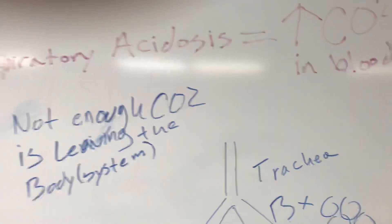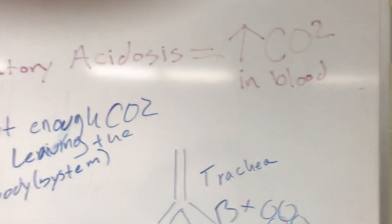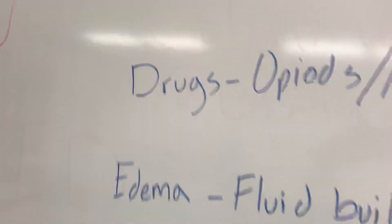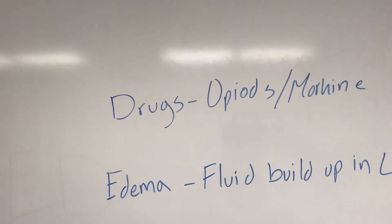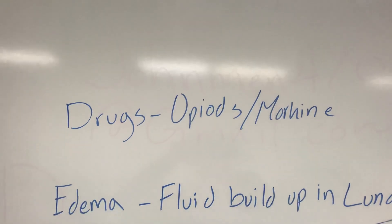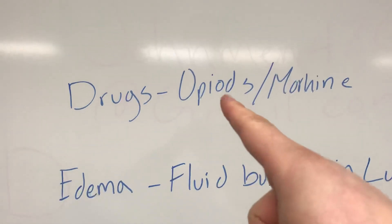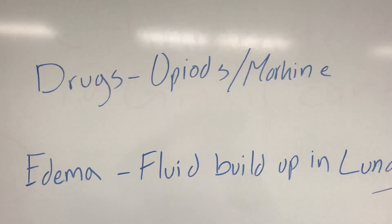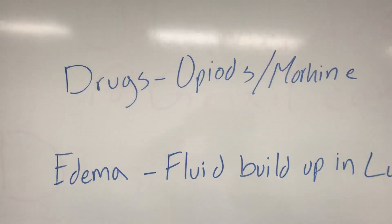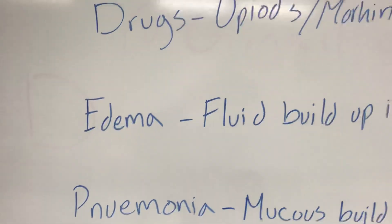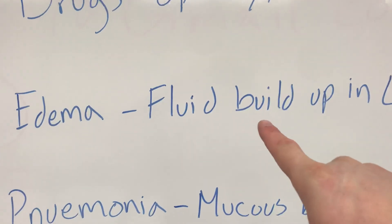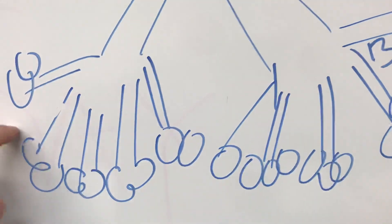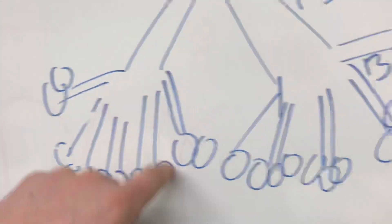What is going to cause your patient to not be able to breathe out enough CO2? Drugs is one reason — opioids or morphine, and you can also add heroin into the mix — because these suppress your respiratory rate per minute. They affect your respiratory center inside the brain. Another cause is edema, meaning a buildup of fluid inside the lungs.